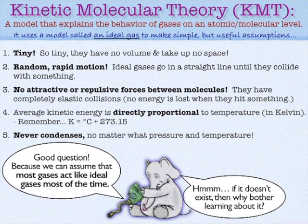What would a perfect student look like? Most students are pretty ideal most of the time. But if you put a student under a lot of pressure — like time constraints — they might start acting less than ideal. Not you, but other students. The same thing goes for gases: most gases will act pretty ideal most of the time, but when you start putting them under a lot of pressure or change the temperature, they might start acting less than ideal.